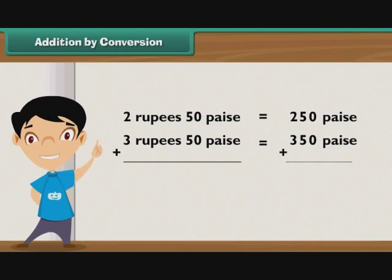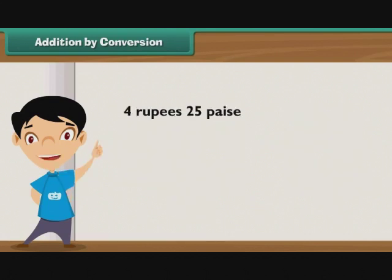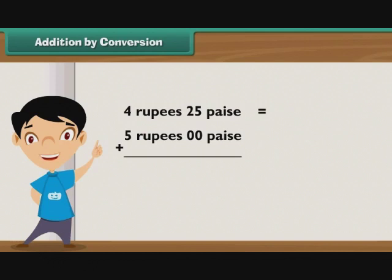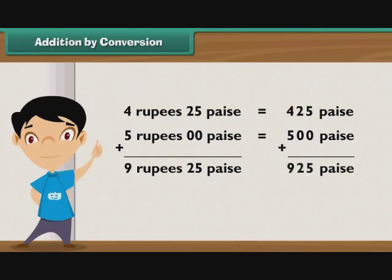So, we add 250 and 350 paise, which is equal to 600 paise. Now let us add 4 rupees 25 paise and 5 rupees. 4 rupees 25 paise is equal to 425 paise; 5 rupees is equal to 500 paise. So, we add 425 and 500, which is equal to 925 paise.